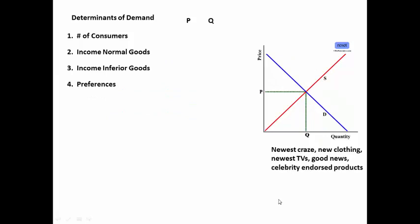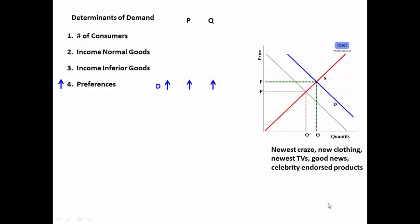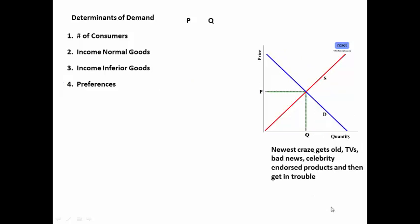As people prefer to buy something — for instance, these items down here — demand increases, causing the curve to shift to the right, driving the price up and the quantity up. As people prefer not to buy things — the newest craze gets old, older televisions, bad news about it — then demand is going to decrease, which causes the price to go down and the quantity to go down.